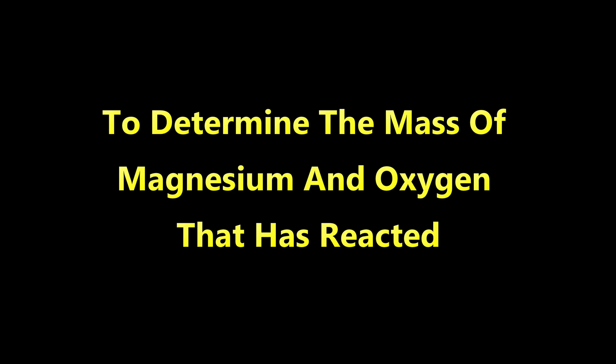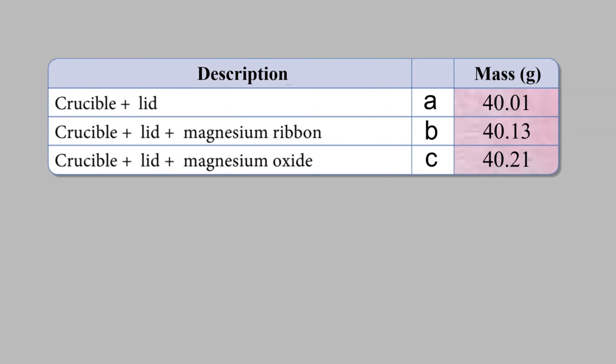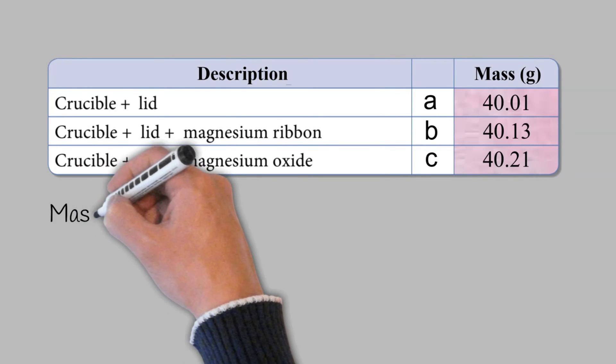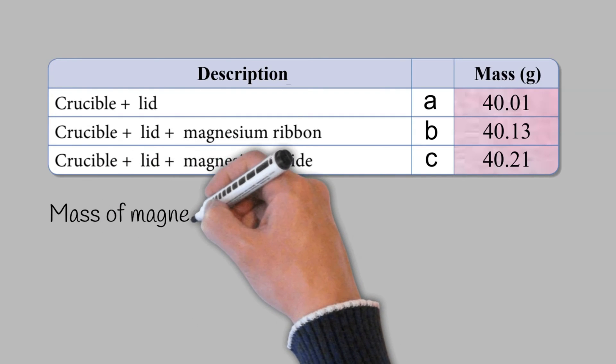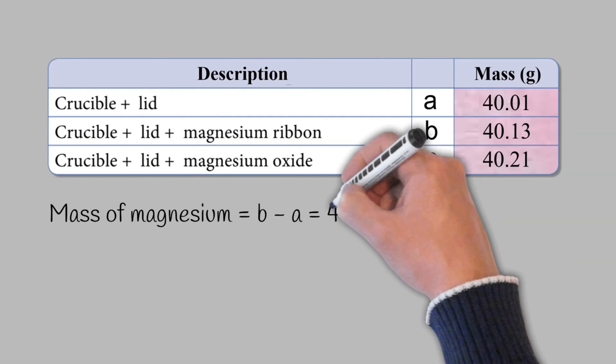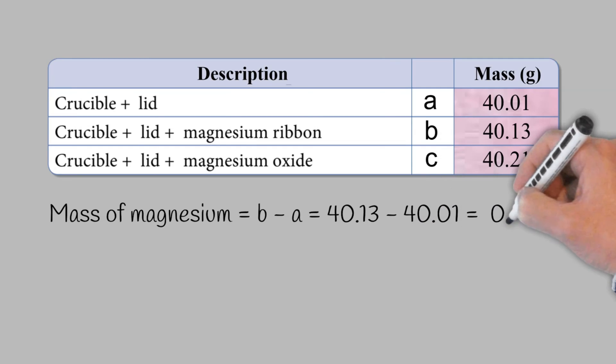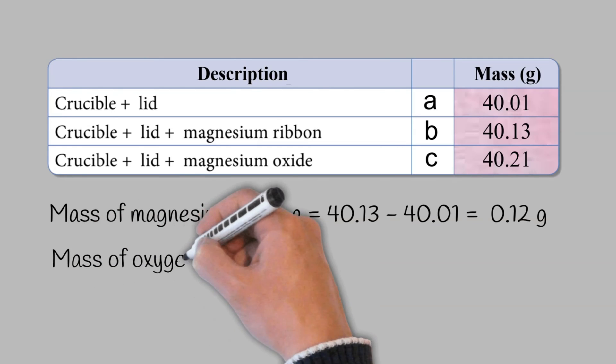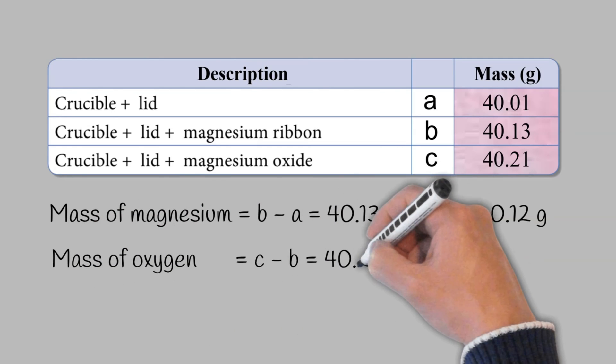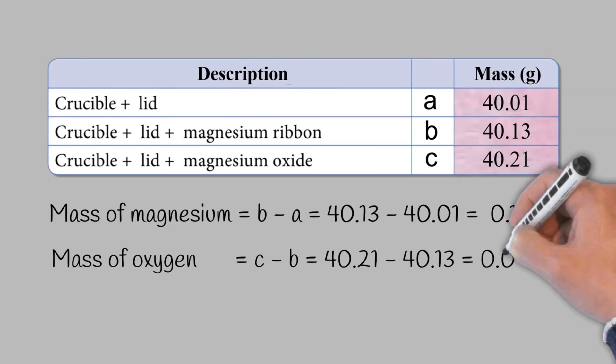To determine the mass of magnesium and oxygen that has reacted. The mass of magnesium is item B minus item A, which is 0.12 grams. The mass of oxygen is item C minus item B, which is 0.08 grams.